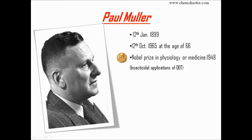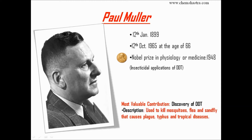The interesting thing about Paul Müller is that he was a chemist, yet he was awarded the Nobel Prize in Physiology and Medicine — a testament to the importance of DDT at that time. DDT was used around the time of World War One or Two to kill mosquitoes, fleas, and sand flies, which cause plague, typhus, and tropical diseases. That was all about the prominent scientists.